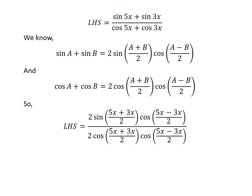Applying the above identities, the left hand side becomes 2 times sine of (5x+3x)/2 times cosine of (5x-3x)/2, upon 2 times cosine of (5x+3x)/2 times cosine of (5x-3x)/2.